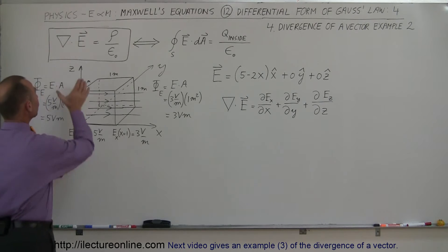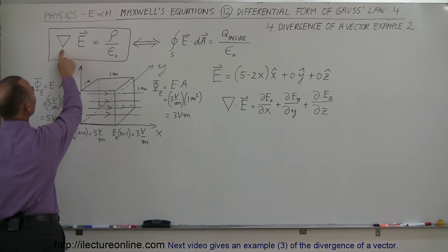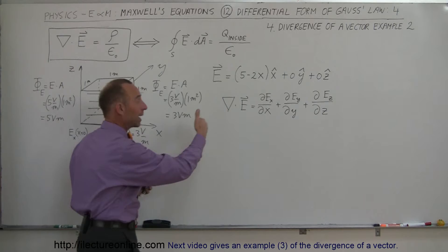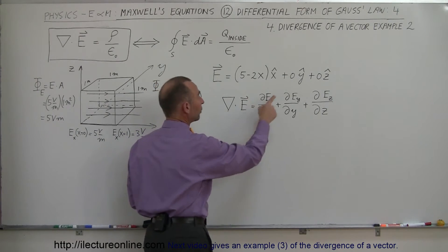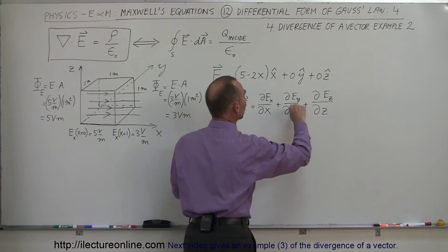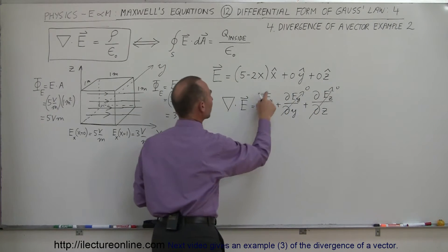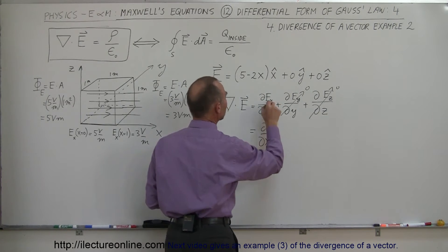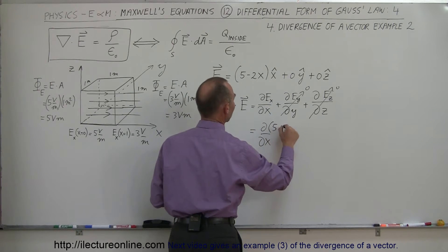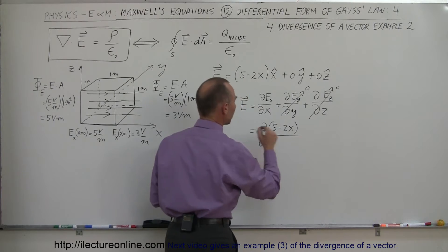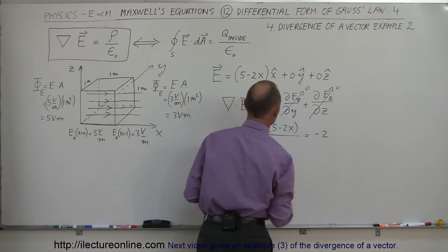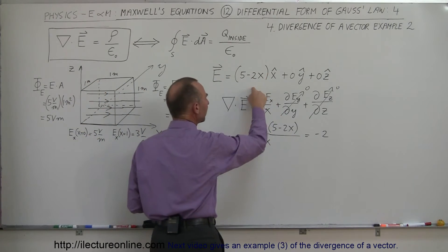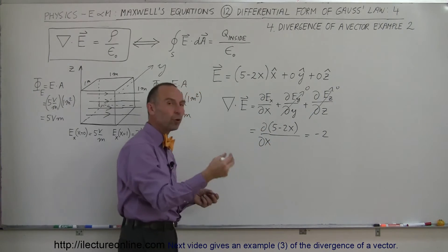Let's now look at the interpretation of taking the divergence of the electric field. There are two ways of looking at that. First, we'll simply do the mathematical thing and take the divergence of the electric field. Since the Y and Z components are zero, those two terms are zero. The derivative of E with respect to X equals the derivative with respect to X of the quantity 5 minus 2X, and of course if we take that derivative we get minus 2. The units: since electric field is in volts per meter, taking the derivative with respect to X gives us volts per meter squared.